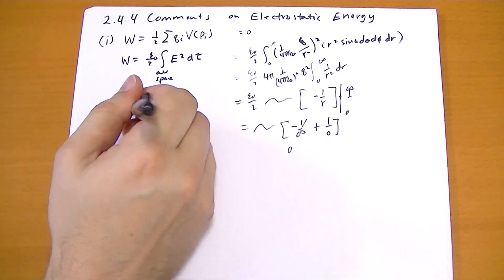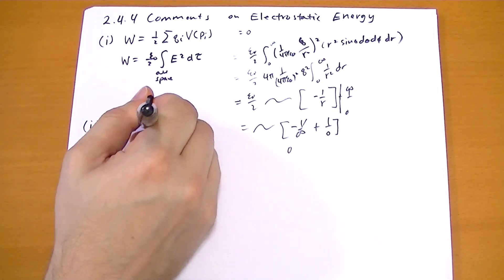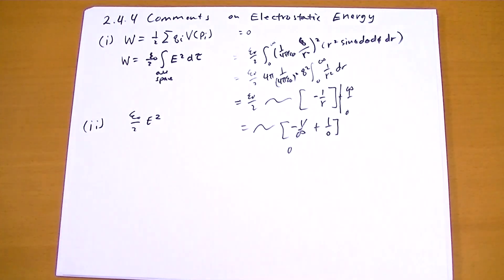If you use general relativity, you're going to find the energy due to electric field. At any given point, it's just epsilon not squared, or epsilon not over 2 e squared.